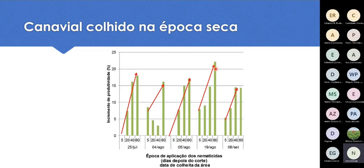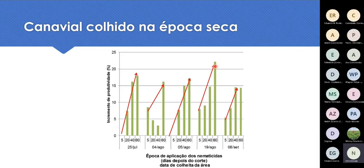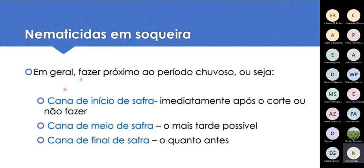Nesse caso estou levando em consideração só os nematóides. Mas hoje os produtores têm que considerar também o Sphenophorus. Às vezes ele colhe a área, precisa fazer um tratamento para Sphenophorus logo depois, e não vai entrar lá na frente com outro cortador para fazer uma segunda aplicação com nematicida. Nesse caso vai usar o nematicida numa época mais seca. Isso ajuda, mas vai ter aumento de produtividade menor do que teria se pudesse fazer perto do período chuvoso. Em soqueira o ideal é fazer próximo do período chuvoso, o mais próximo possível, mas nem sempre conseguimos porque temos que considerar o manejo de outras pragas.